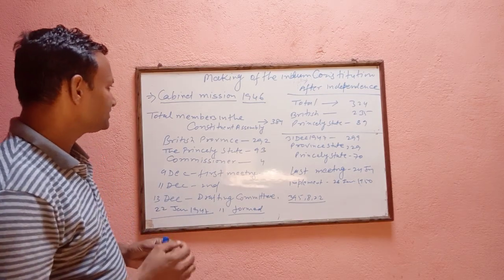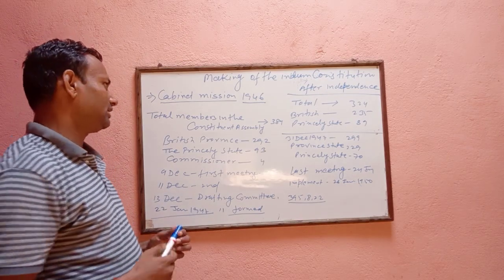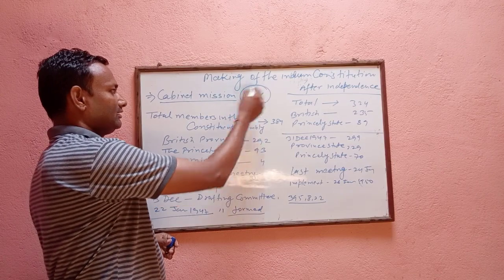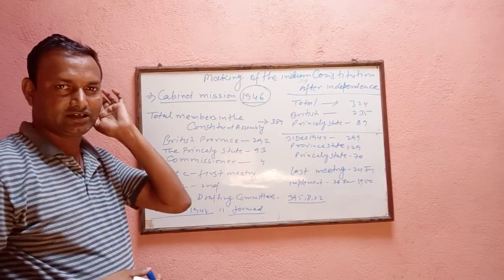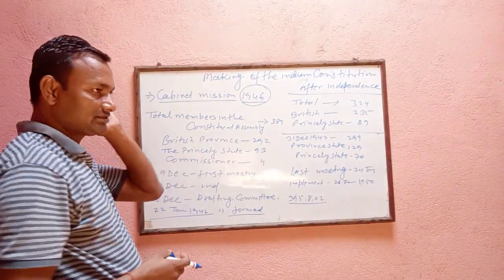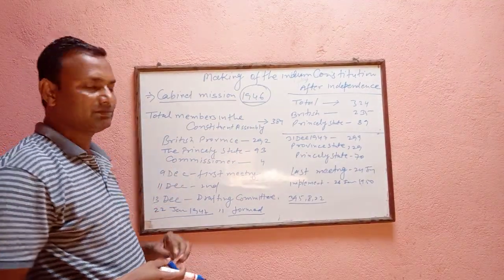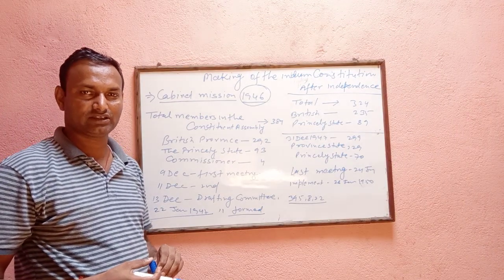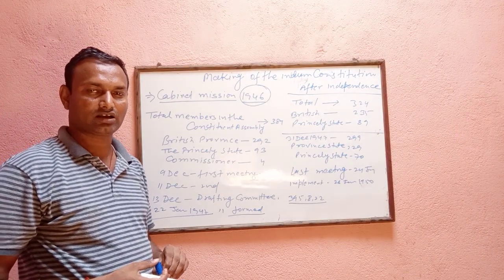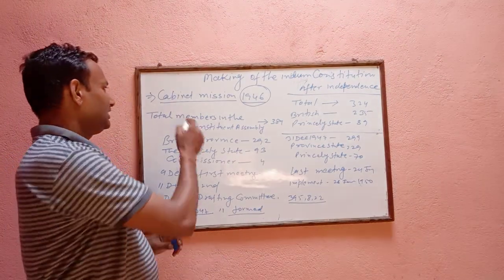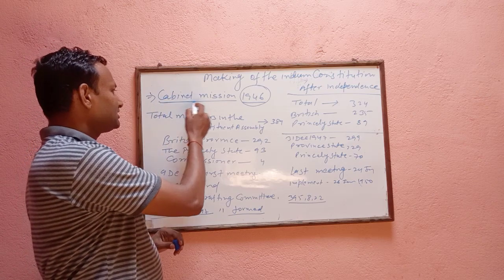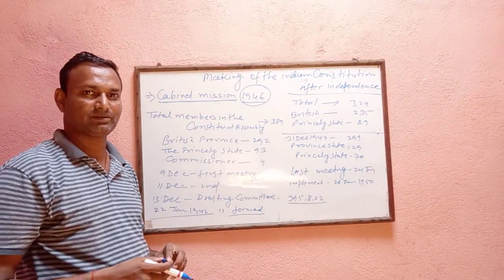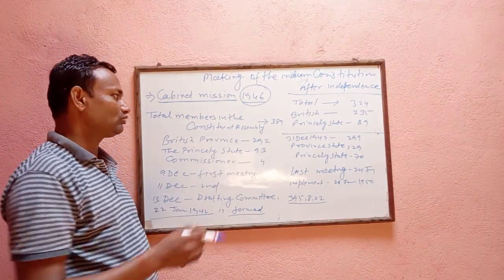The Cabinet Mission came in 1946. There were three members: A.B. Alexander, Pethick Lawrence, and Stafford Cripps. The Cabinet Mission was sent by the British Parliament and British Government to establish the Constitutional Assembly.